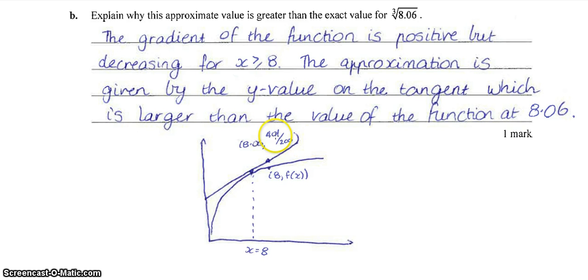And the very last question was quite a difficult one to explain. I think probably the easiest way to do it is to draw a picture. So what we're trying to show is that what we just worked out, the 401 over 200 is actually larger than what the cube root of 8.06 actually is. So if you draw what the cube root of x looks like and you show that the tangent at the point 8 is here.